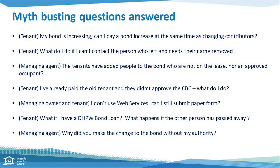From a tenant's perspective: I've already paid the old tenant and they didn't approve the change of bond contributors — what do I do? If the request is not approved, both the old tenant and the new tenant need to talk to each other. The RTA encourages people to communicate to resolve these matters. If they're unable to resolve the issue, they may need to seek alternative dispute resolution or independent legal advice, but please also contact our RTA contact centre for assistance with your options.